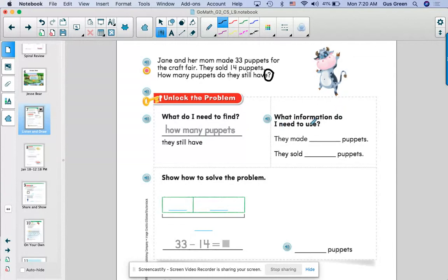What information do I need? Well, I need to know how many they started with for sure. So they started with 33, and they sold how many puppets. And I go right up to the problem and see that it says right there in the second sentence, they sold 14 puppets.